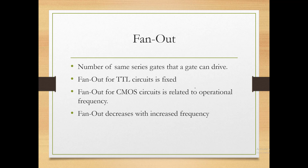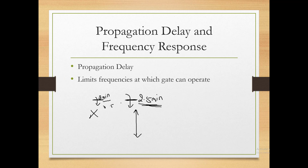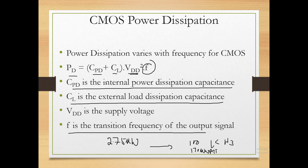Fan out is the number of same-series gates that a gate can drive. For example, if we have a CMOS AND gate, how many AND gate inputs can its output drive? Fan out of TTL is fixed. Fan out for CMOS is related to operational frequency. In TTL, fan out is fixed; for CMOS, two types of capacitance are relevant: CPD (internal power dissipation capacitor) and CL (external output load capacitor).